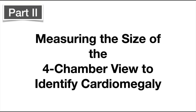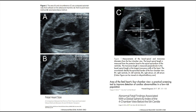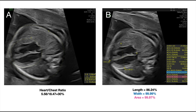Part 2: Measuring the size of the four-chamber view to identify cardiomegaly. Identification of cardiomegaly is important because of the long list of associated fetal abnormalities. Three methods are described to measure the end-diastolic area of the four-chamber view: the point-to-point trace method (Figure A), the ellipse tool (Figure B), or the two-diameter method (Figure C). The two-diameter method is preferred as a screening tool because it takes less time and allows for measurement of the width, length, and global sphericity index, which assesses the shape of the four-chamber view. One method to assess the size of the heart is to measure the area of the heart and chest, but this only infers enlargement from the heart-to-chest ratio and does not directly confirm whether the heart is actually increased in size.